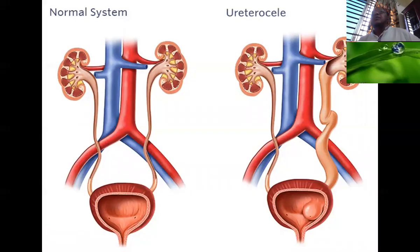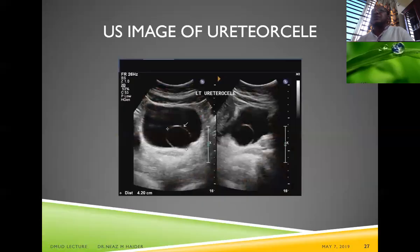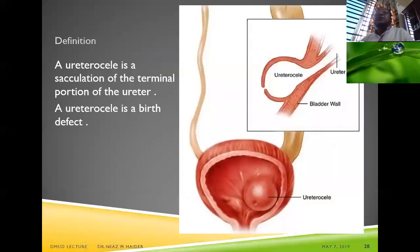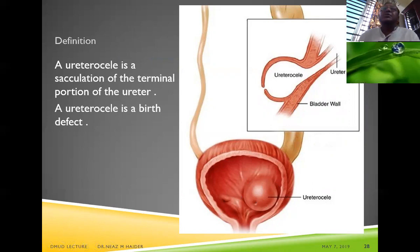The next topic is ureterocele. A large ureterocele within the urinary bladder is shown. By definition, a ureterocele is a cystic dilation of the terminal portion of the ureter. A schematic drawing shows the ureter entering the bladder with the ureterocele and the bladder wall.